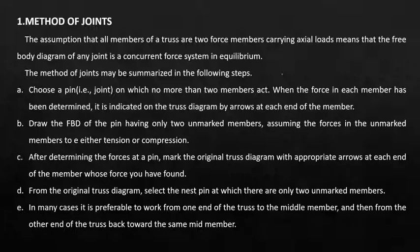The method of joints may be summarized in the following steps. First, choose a pin — that is a joint — on which no more than two members act. This is for simplicity, so that we can use the equilibrium equations in determining the forces in the different members.